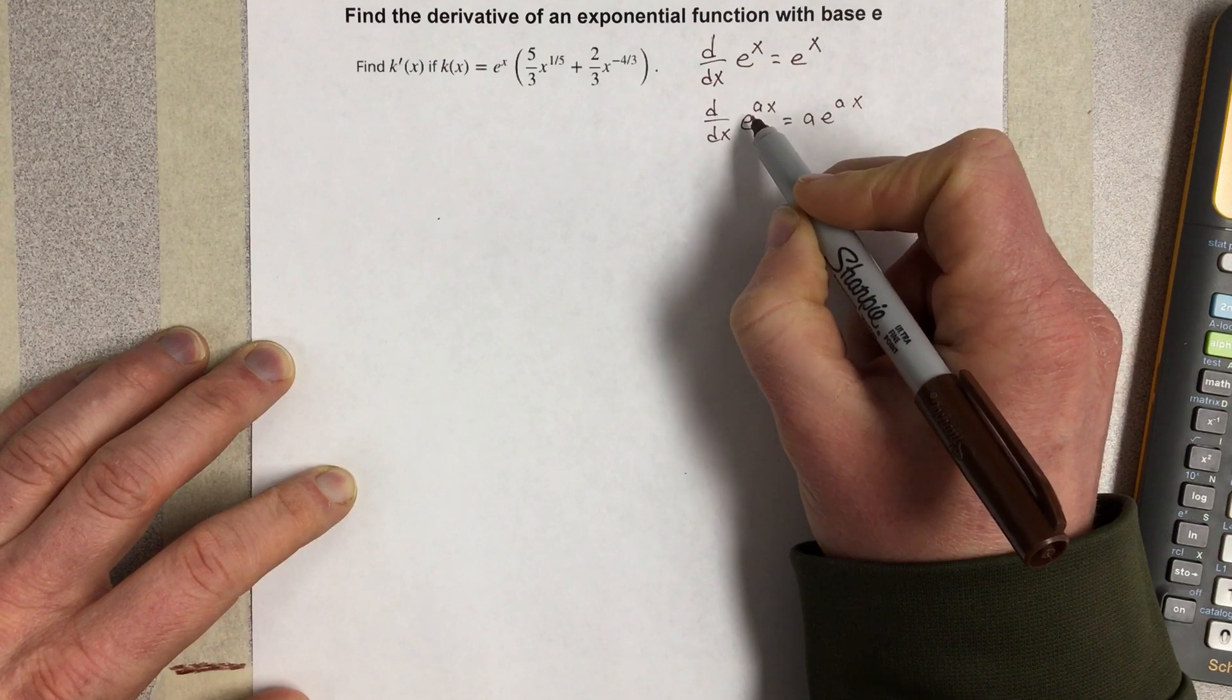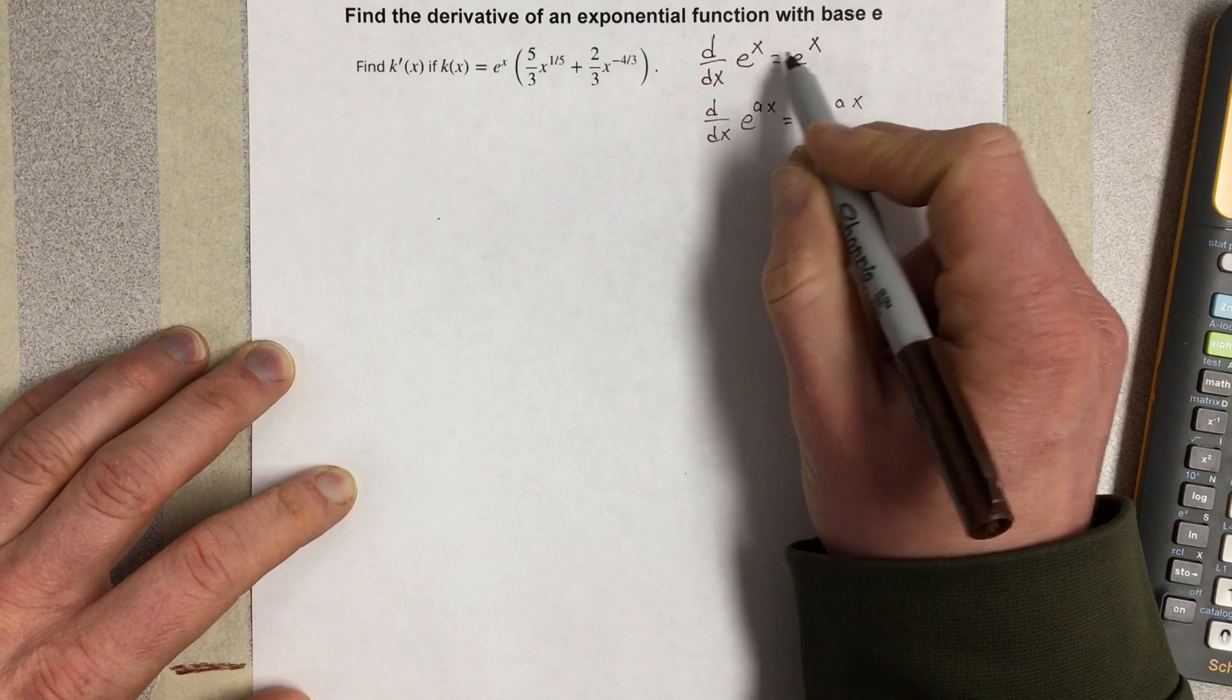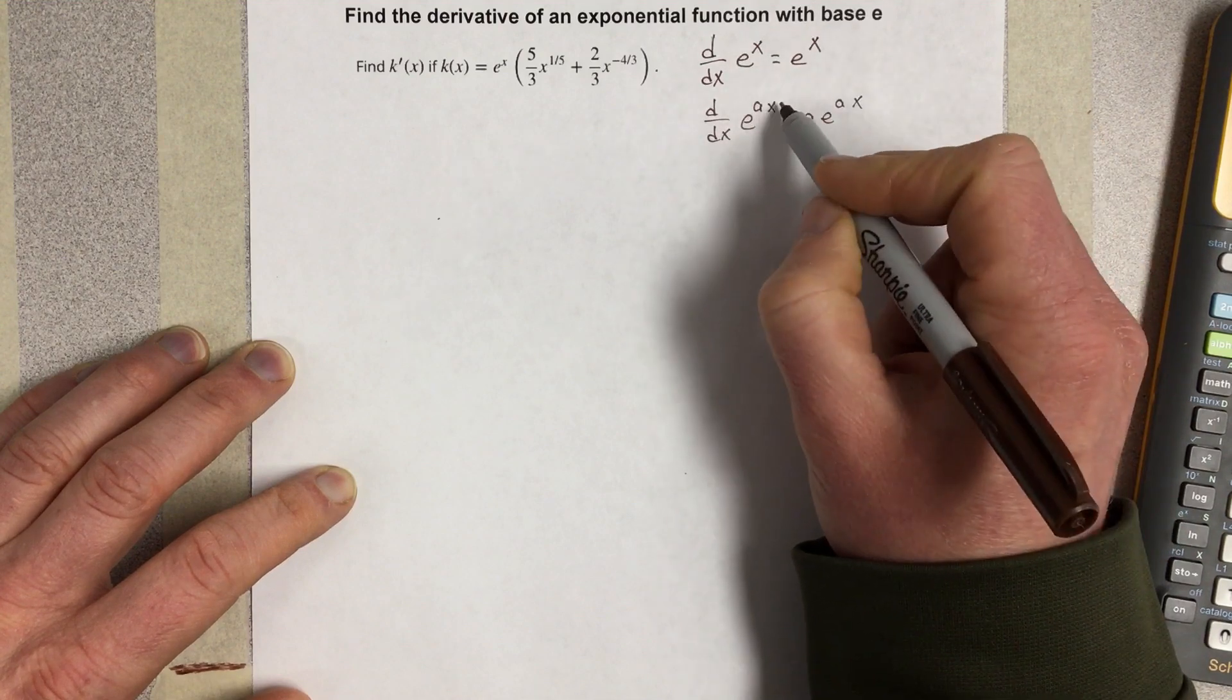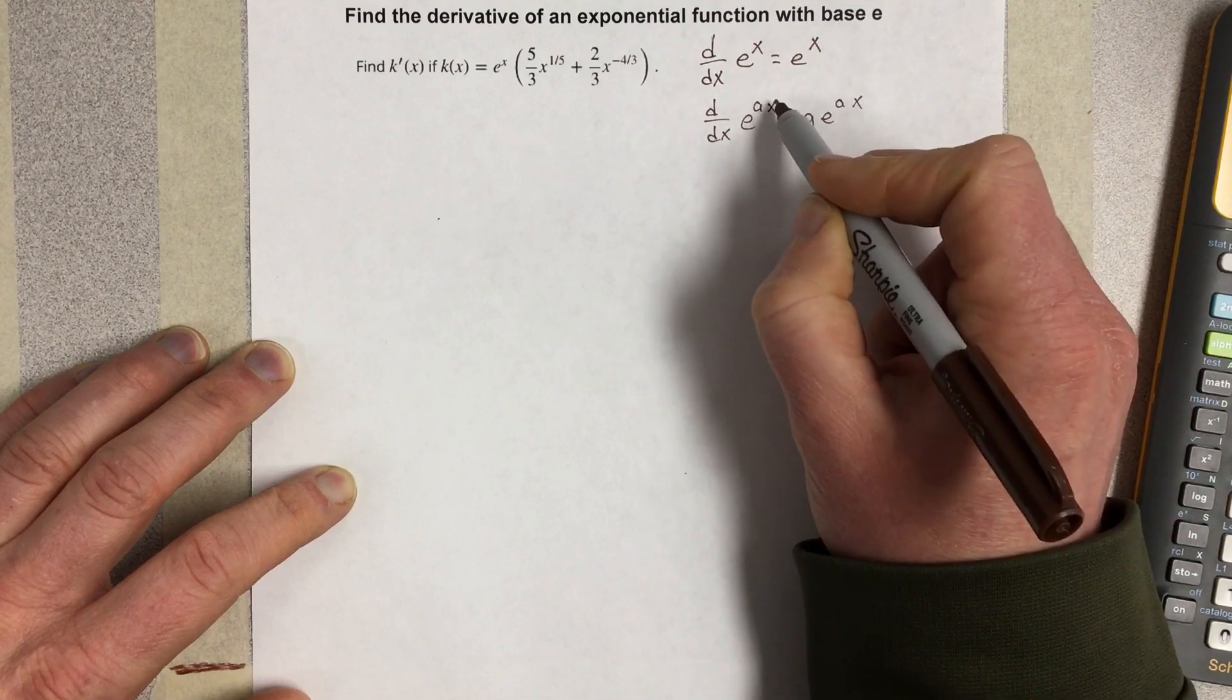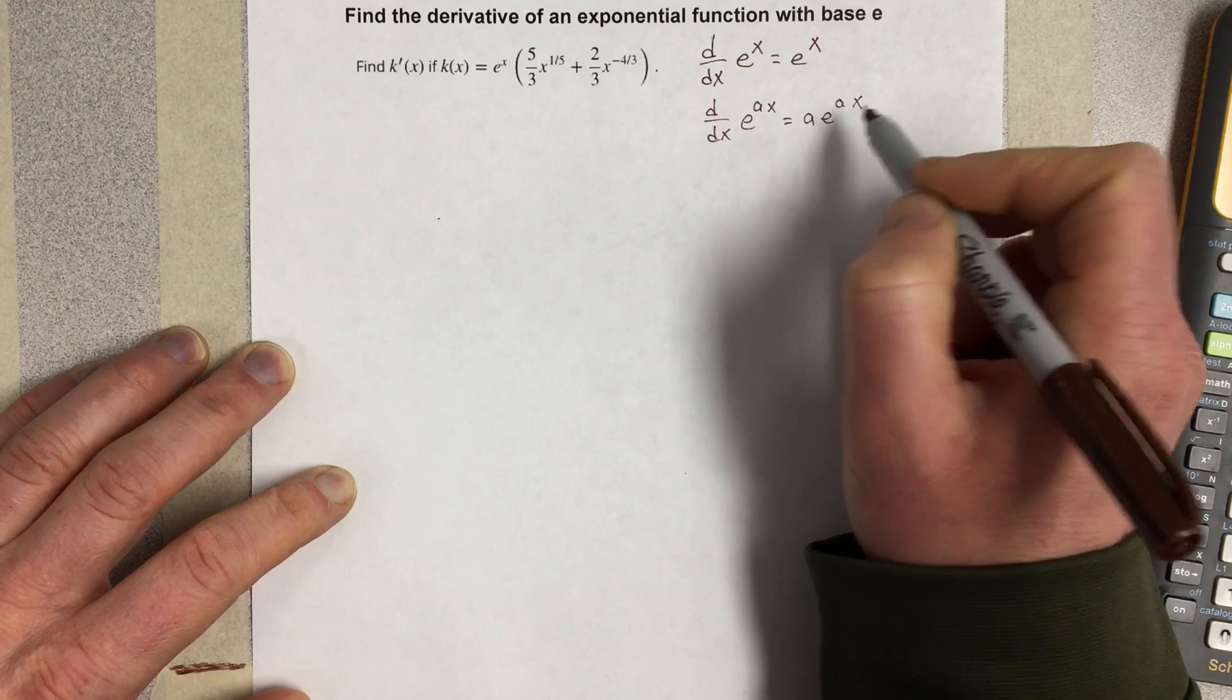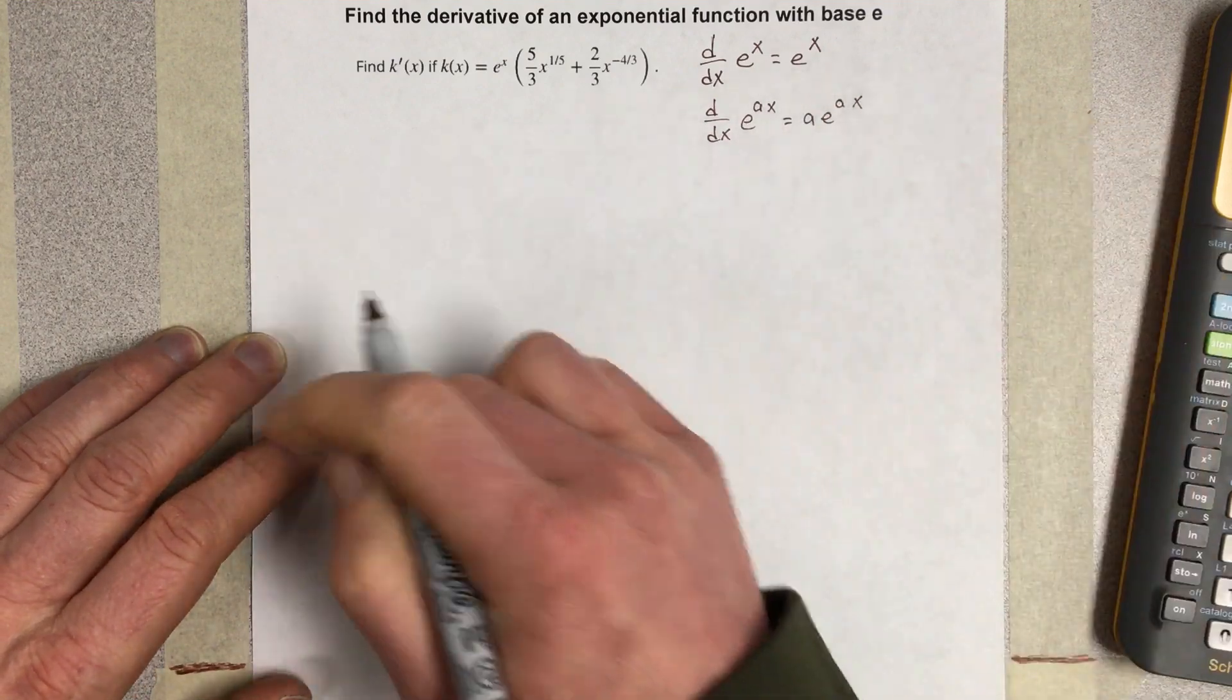And chain rule would say take the derivative of the outside, which would be itself. That's what we just saw right there. And then take the derivative of the inside. Well, if you take the derivative of ax, you get a, so you end up multiplying by a.